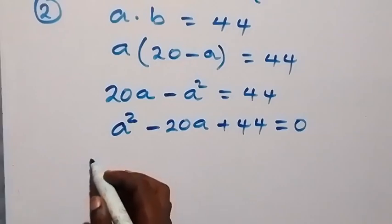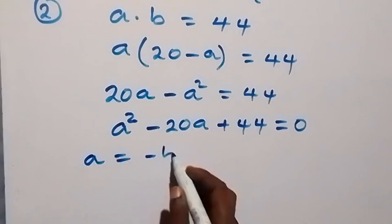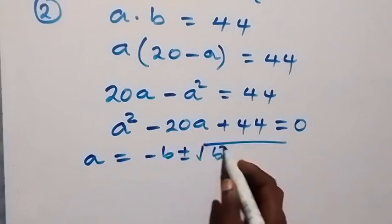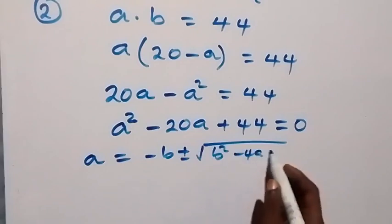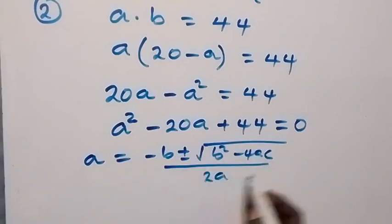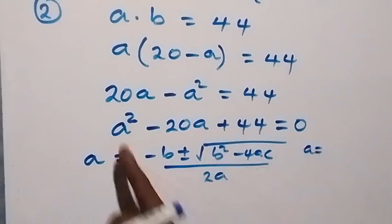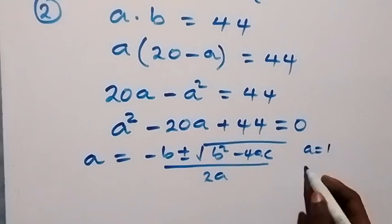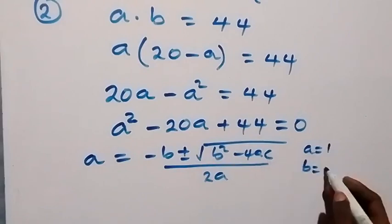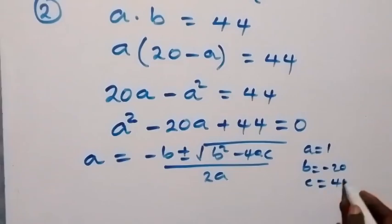Then using the quadratic formula, A will now be equals to minus b plus or minus square root of b squared minus 4ac, over 2a. So A in this formula — the coefficient of A squared — is 1. And B here is the coefficient of A, which is minus 20. Then C there is 44.